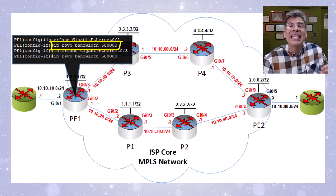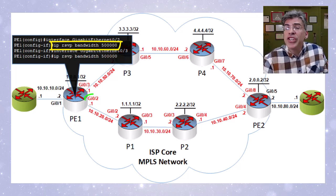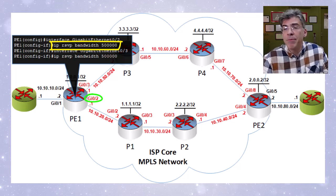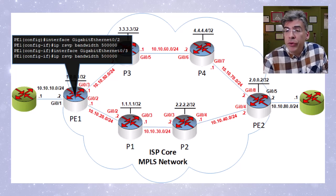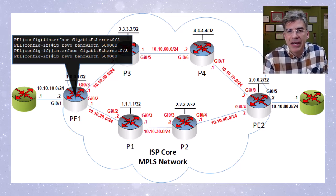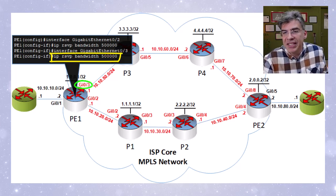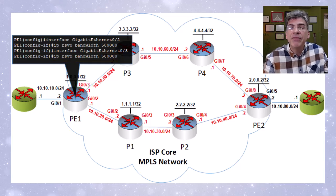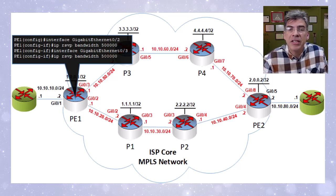The 500,000 number is in kilobits per second. With this command, we're telling the router that any RSVP TE signaling traversing this interface must be informed that up to 500,000 kbps — or 500 Mbps, essentially half the throughput of our GigabitEthernet interface — will be allocated. This command tells the router the maximum amount of bandwidth that can be set aside for all RSVP requests passing through the interface. Every time a certain amount is allocated, it is subtracted from this maximum. We apply this command on all interfaces on all P routers and the core-facing interfaces of PE routers.